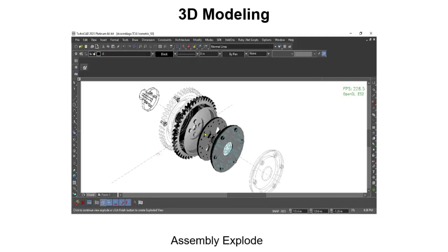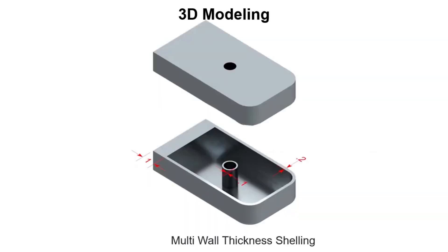Next is Assembly Explode, a feature that allows you to visualize intricate assemblies with an exploded view, simplifying the understanding and communication of part relationships. The Shell Multi-thickness feature enables the creation of hollow models with varying wall thicknesses, providing greater flexibility in your designs.